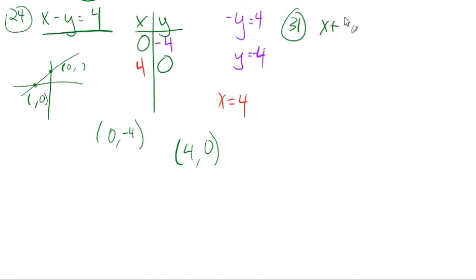31, x plus 4y equals 8. When it's in standard form, we could put it in slope-intercept form, but that would be kind of tedious, since it'd be really easy to find a couple of points real quick if we let x be 0 and y be 0, and we have two points. So if x is 0, we're left with 4y equals 8, and y equals 2. So y is 2.